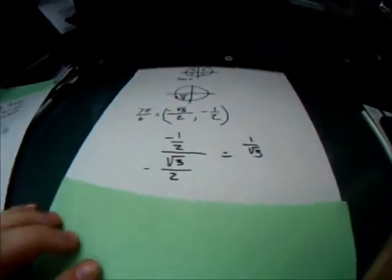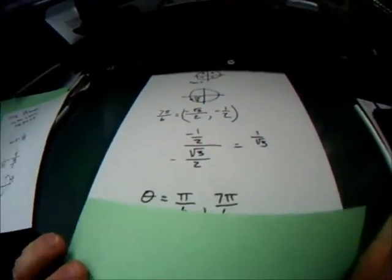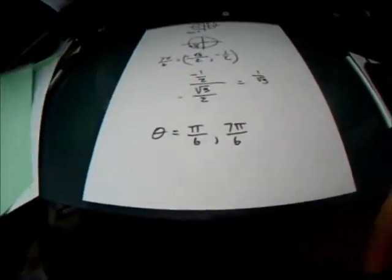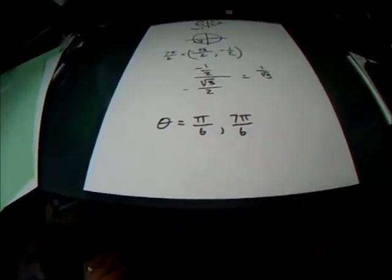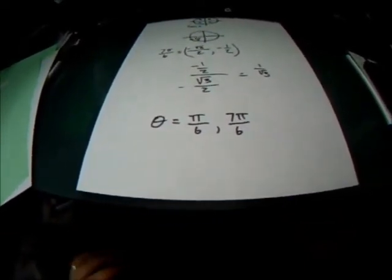And that's what we had before. So our two values of θ are θ = π/6 and θ = 7π/6.